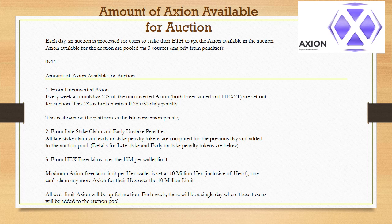3) From HEX free claims over the 10 million HEX wallet limit. The maximum Axion free claim limit per HEX wallet is set at 10 million HEX, inclusive of HEART. Users cannot claim any more Axion for HEX over the 10 million limit. All over-limit Axion will be up for auction. Each week there will be a single day where these tokens will be added to the auction pool.